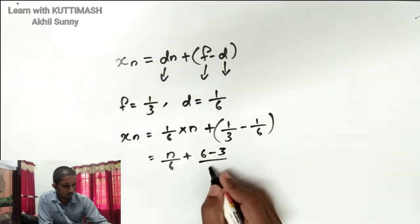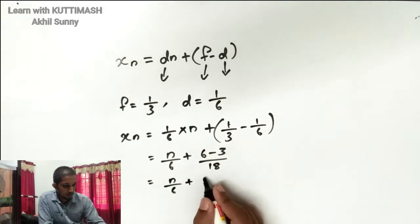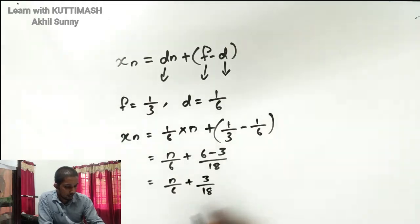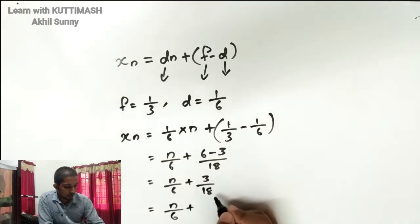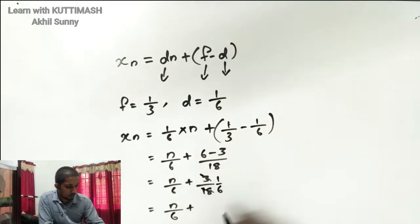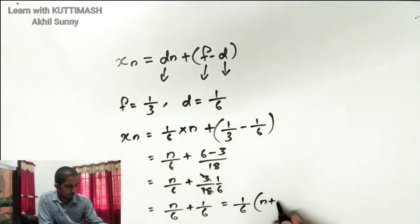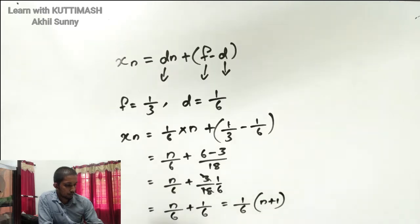So substituting: d = 1/6, f = 1/3. We get n/6 + (6 minus 3) over 18, which simplifies to n/6 + 3/18 = n/6 + 1/6. Therefore xn = (n + 1)/6.